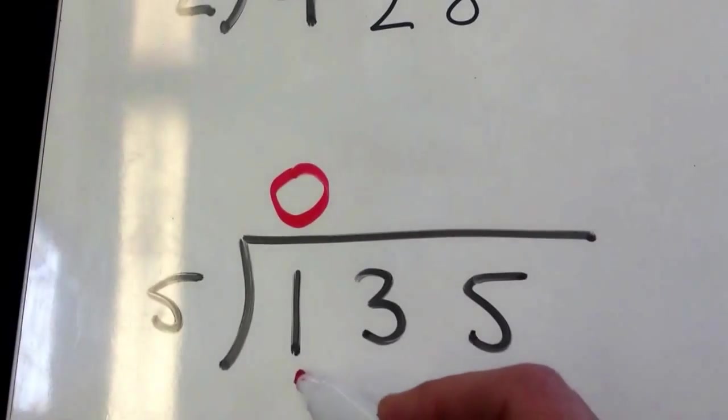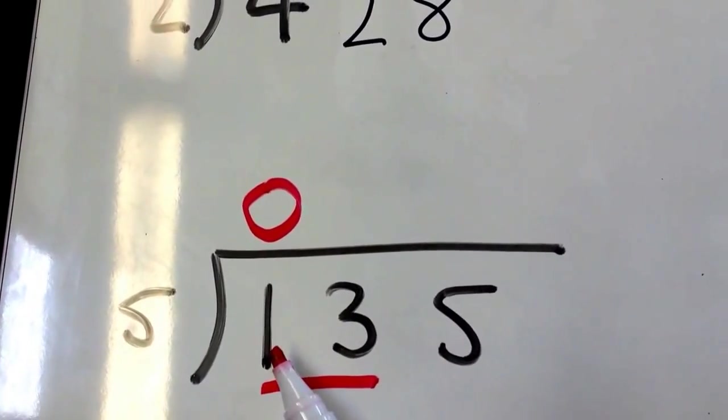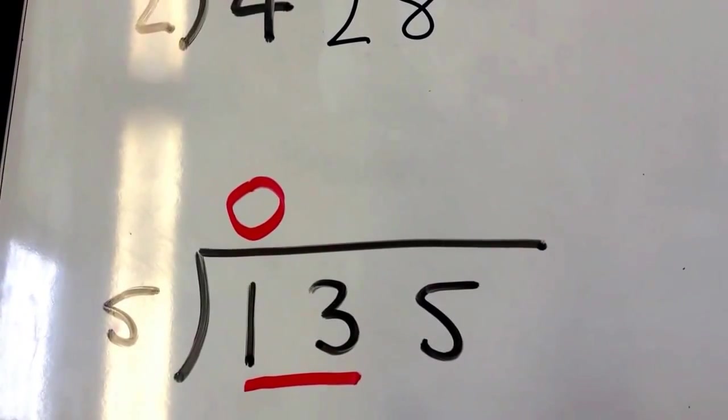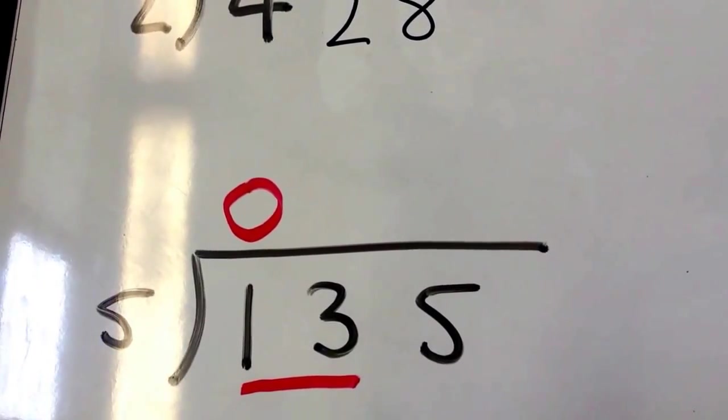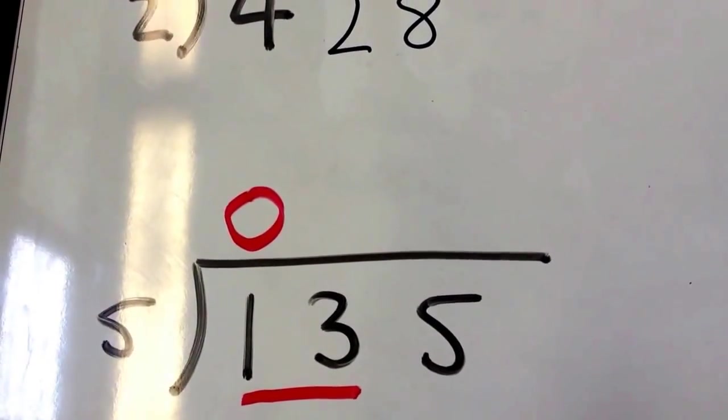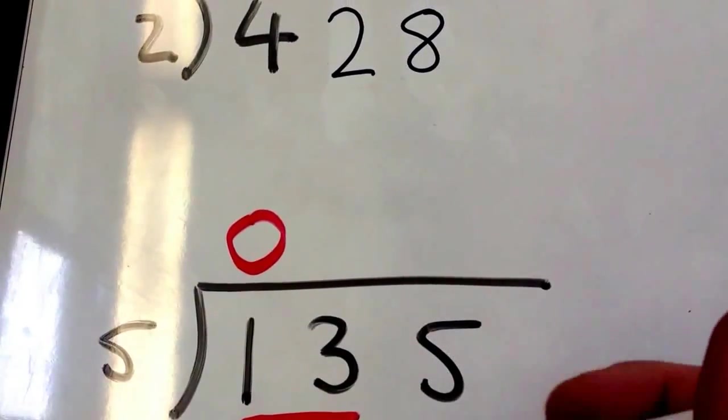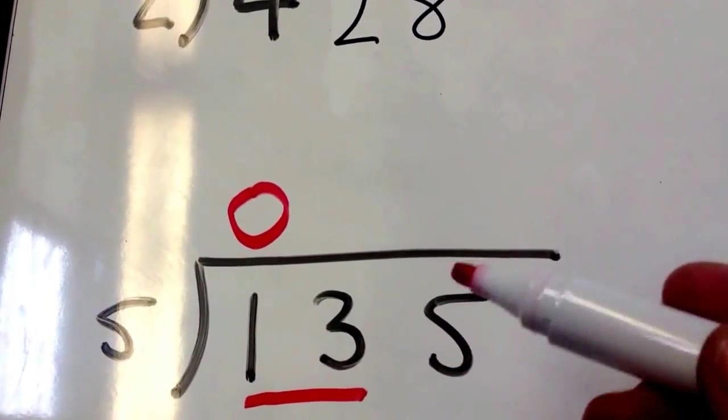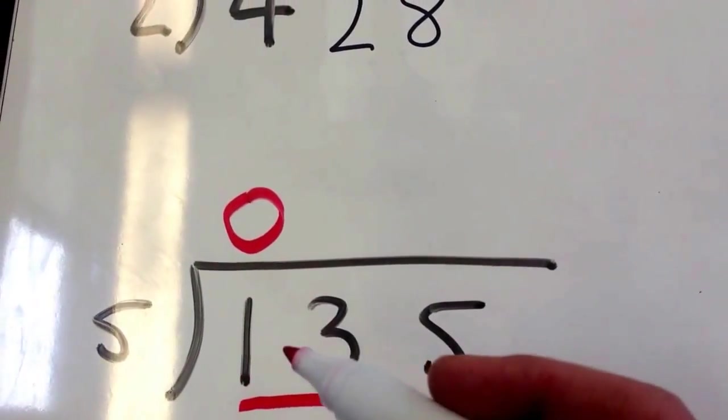Now we look at the two numbers together. How many times does 5 go into 13? Well, knowing our basic facts, 5 times 2 is 10. But there's some numbers left over. 5 times 3 is 15—that's too much. But 5 times 2 is 10 with 3 left over.